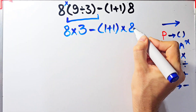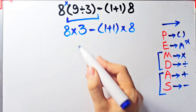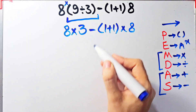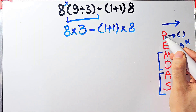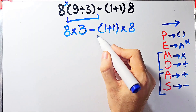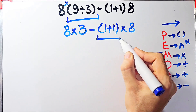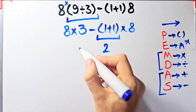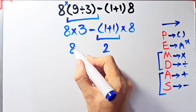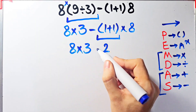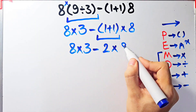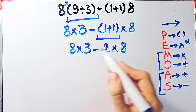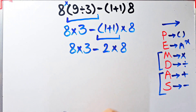Now we have multiplication, subtraction, parentheses, and addition. Again we simplify the parentheses: 1 plus 1 equals 2. Now the question is 8 times 3 minus 2 times 8. We have multiplication and subtraction — first we simplify the multiplication because it has higher priority than subtraction.